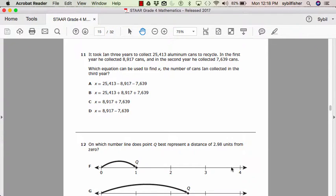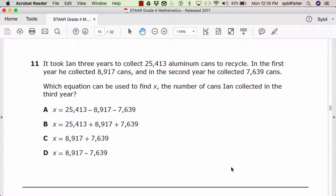Number eleven. It took Ian three years to collect 25,413 aluminum cans to recycle. In the first year, he collected 8,917 cans. In the second year, he collected 7,639 cans.